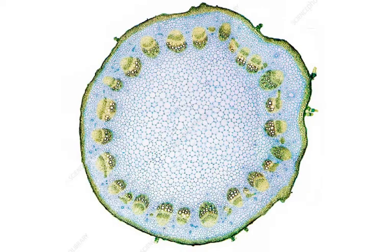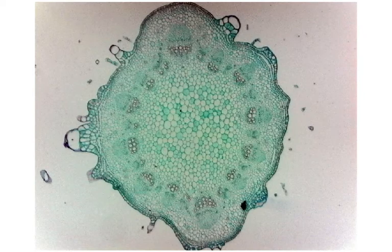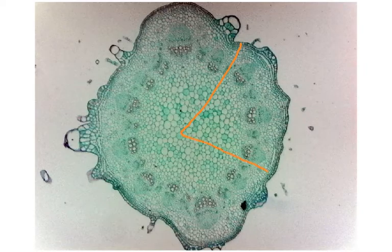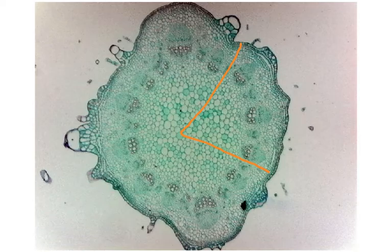It could have been this one, so you could have drawn this area. Or it could have been this one — looking at the mark scheme for the later question, I have a guess that these could be the different slides. Now in a plan drawing, you don't draw any cells. You just draw a plan of the tissues. I'm going to give you a plan drawing of each of these.